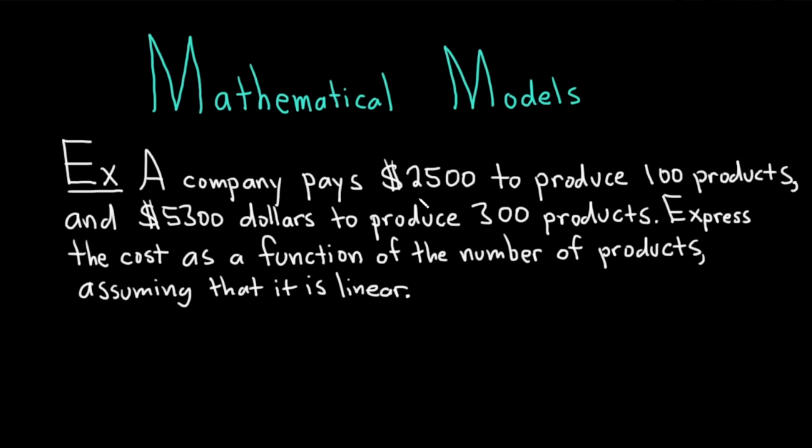A company pays $2,500 to produce 100 products and $5,300 to produce 300 products. Express the cost as a function of the number of products, assuming that it is linear. So we're going to create a linear mathematical model based off of this information. Solution.